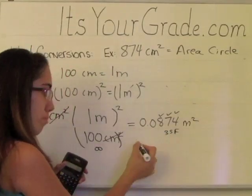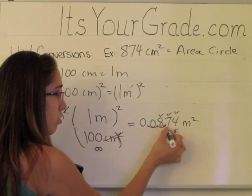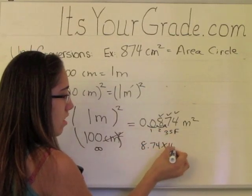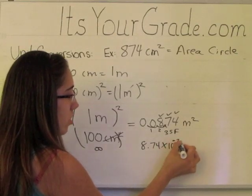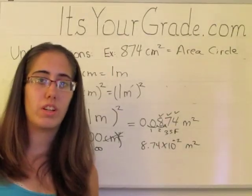Or for those professors who like scientific notation, this would be 8.74 times 10 to the negative 2 meters squared. And that's all there is for a unit conversion.